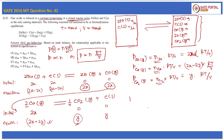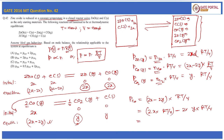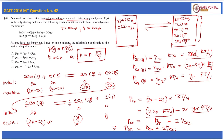We can write P_CO = 2x·RT/V − 2y·RT/V. As you can see, 2x·RT/V is nothing but P_Zn, and y·RT/V is nothing but P_CO₂. Rearranging, we get P_Zn = P_CO + 2·P_CO₂. This is the final answer, so Option A is correct.